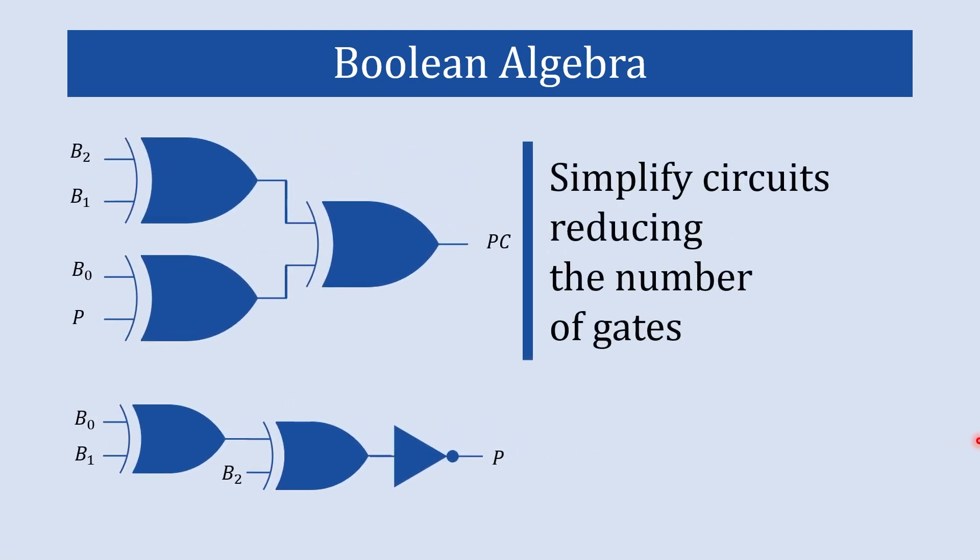Boolean equations are employed to simplify circuits, reducing the number of gates and connections needed. This simplification helps in reducing cost, size, and power consumption in electronic devices, and this is one of the most important positive aspects of Boolean algebra.